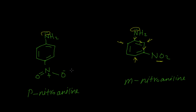In para-nitroaniline, both the resonance effect and the inductive effect are present, whereas in meta-nitroaniline only the inductive effect is present and the mesomeric effect is absent. So the para-nitroaniline has lower electron density over the nitrogen than meta-nitroaniline, meaning meta-nitroaniline is more basic than para-nitroaniline.